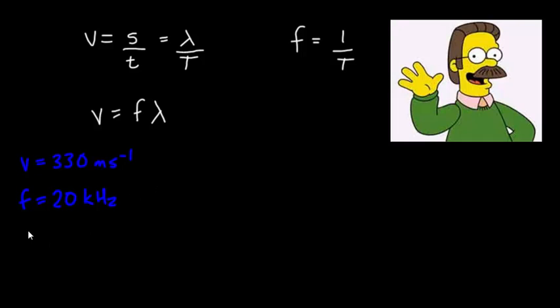We can use the wave speed equation to find out the wavelength of sound at this frequency. So we can rearrange, we'll get lambda equals V divided by F, which will give us 330 divided by 20 times 10 to the power of 3, which gives us a wavelength of 1.65 times 10 to the minus 3 meters, or 1.65 millimeters.